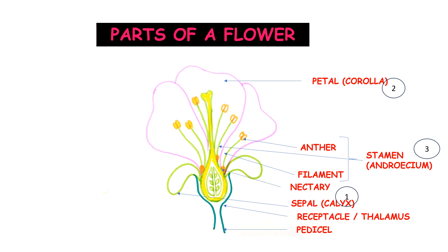Before the fourth whorl, some flowers may contain a structure called the nectary, which is found below the stamen. The nectaries help in producing nectar, which attracts insects for pollination.